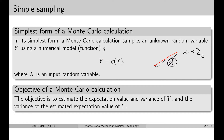As you can imagine, for every single input variable value the result will be different. So every time we select the energy of the fission neutron and the actual random number in order to sample the distance to the first collision, the distance will be different. The idea is to sample a large number of these distances and to process the result statistically.